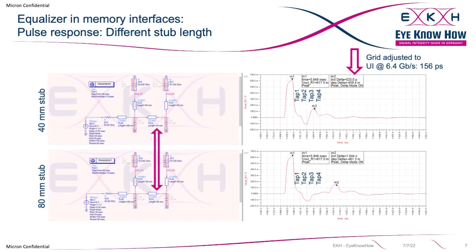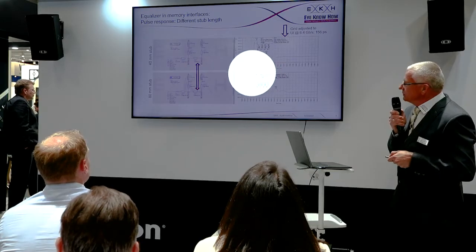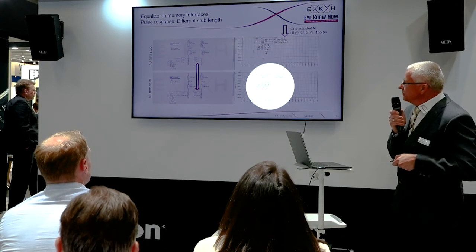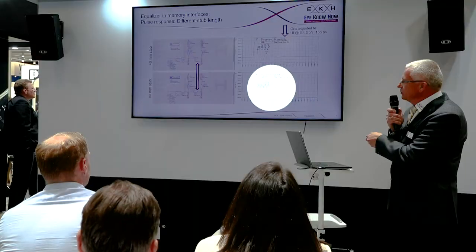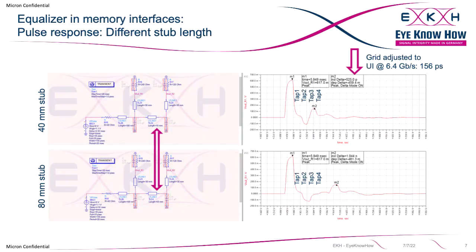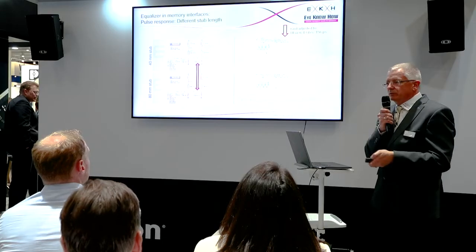Running the same simulation with 50 millimeters (80 millimeters total path), we see the initial peak but the final reflection returns beyond tap 4 — there is no tap left to compensate it. So the DFE as defined for DDR5 memory would not be able to compensate this kind of reflection. This is the main reason we use a DFE with exactly four taps, which is optimized for a two-DIMM-per-channel system.